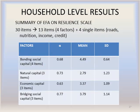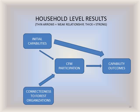At the household level, we collected quantitative data on 30 resilience indicators, and the results of the factor analysis showed that the scale contained four factors, each of which had a high internal consistency reliability. We also included four single items for further analysis. The results of the regression analysis showed that household connectedness to forest organizations had a significant positive effect on participation in the CFM program. However, only bonding social capital had a significant positive effect on household participation.